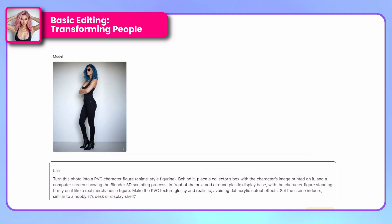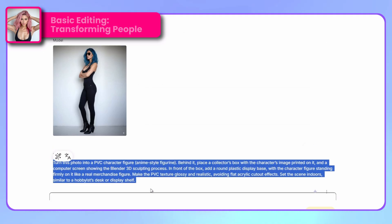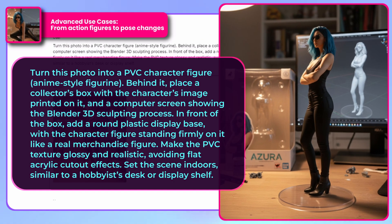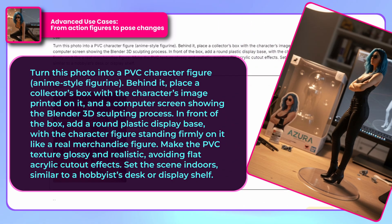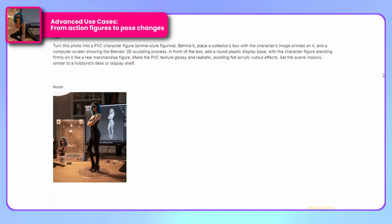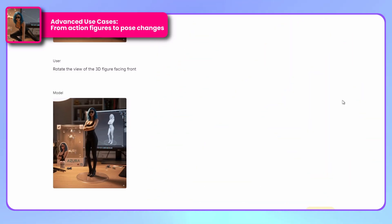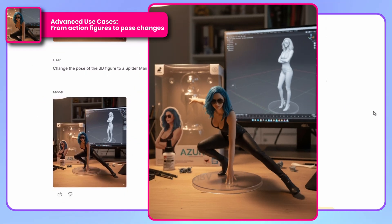Nano Banana can convert any image into an action figure within its original packaging — we simply tell it this prompt and here we have the result. As you can see, it has the plastic texture as if it were a toy figure. And as we can see here on the computer screen background, it looks like there's a simulation running a 3D program like Blender or Rhino. Now we'll tell it to show it from a frontal angle — it only rotated the image and figure while leaving everything else intact. We can also tell it to change the pose as if it were a Spider-Man pose, and here we have the result.